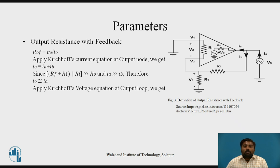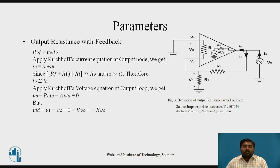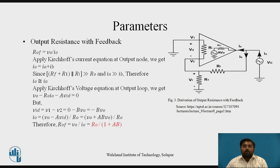Applying Kirchhoff's voltage equation at the output loop gives Vo minus Ro·IO minus A·Vid equals 0. Here Vid equals V1 minus V2; since V1 is connected to ground it becomes 0, so Vid equals minus beta·Vo. Rearranging, IO equals Vo minus A·Vid divided by Ro. Therefore RoF equals Vo upon IO equals Ro divided by 1 plus A·beta, which is the final value of output resistance with feedback.